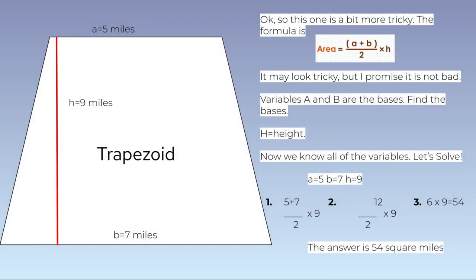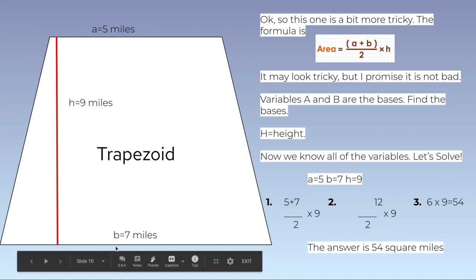Alright, so this one's a bit more tricky. We're going to look at a trapezoid now. The formula is area equals base 1 plus base 2, a and b, divided by 2, times h. It may look tricky, but I promise it's not that bad. Variables a and b are the bases. Let's find the bases. So the bases are up here and down here. The two parallel lines are the bases.